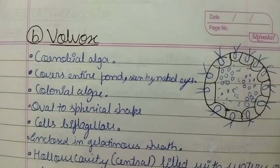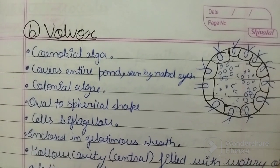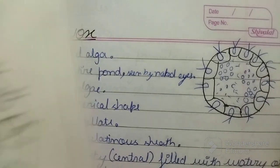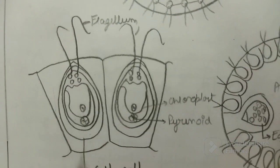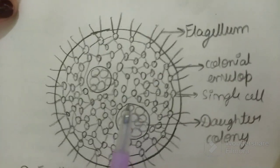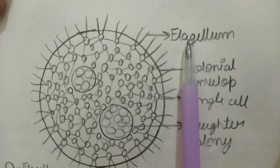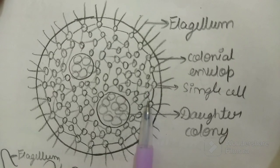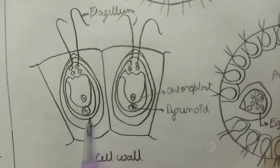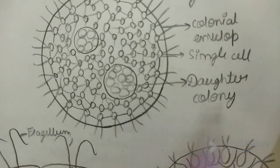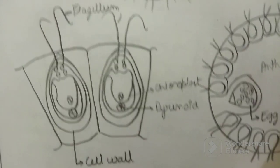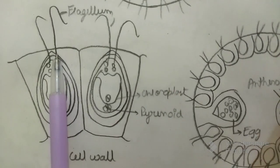The individual cells of the coenobium are Chlamydomonad type — they will look like Chlamydomonas. If I show you in this diagram, you can see this is the complete colony of Volvox. Here is the flagellum, this is the colonial envelope, and these are your single cells. These single cells look like Chlamydomonas. And then this is your daughter colony inside the parent colony. Each single cell consists of two flagella.